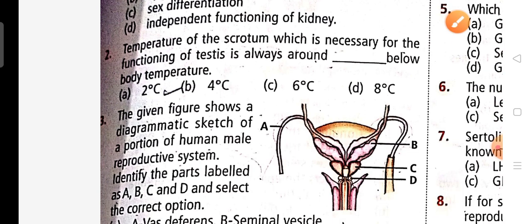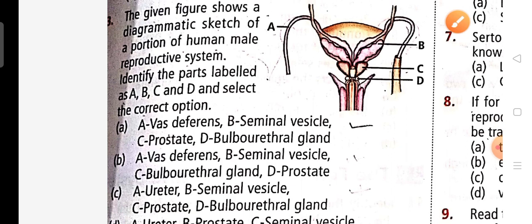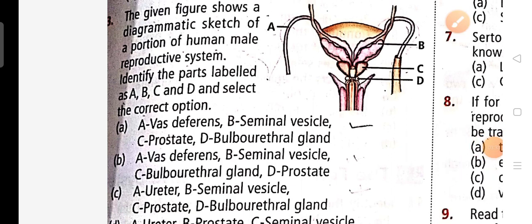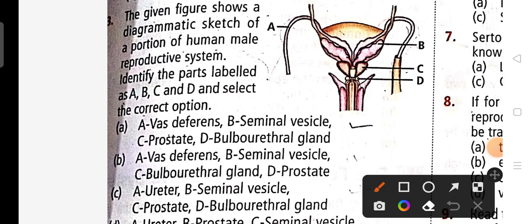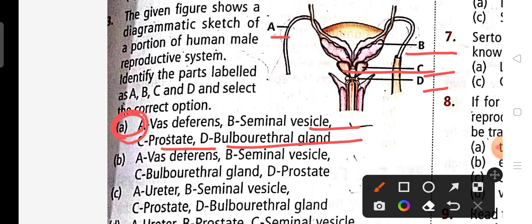Third question: the given figure shows a diagrammatic sketch of a portion of the human male reproductive system with options A, B, C, D. The right answer is: A is the vas deferens, B is the seminal vesicle, C is the prostate gland, and D is the bulbourethral gland. So the correct answer is option A.